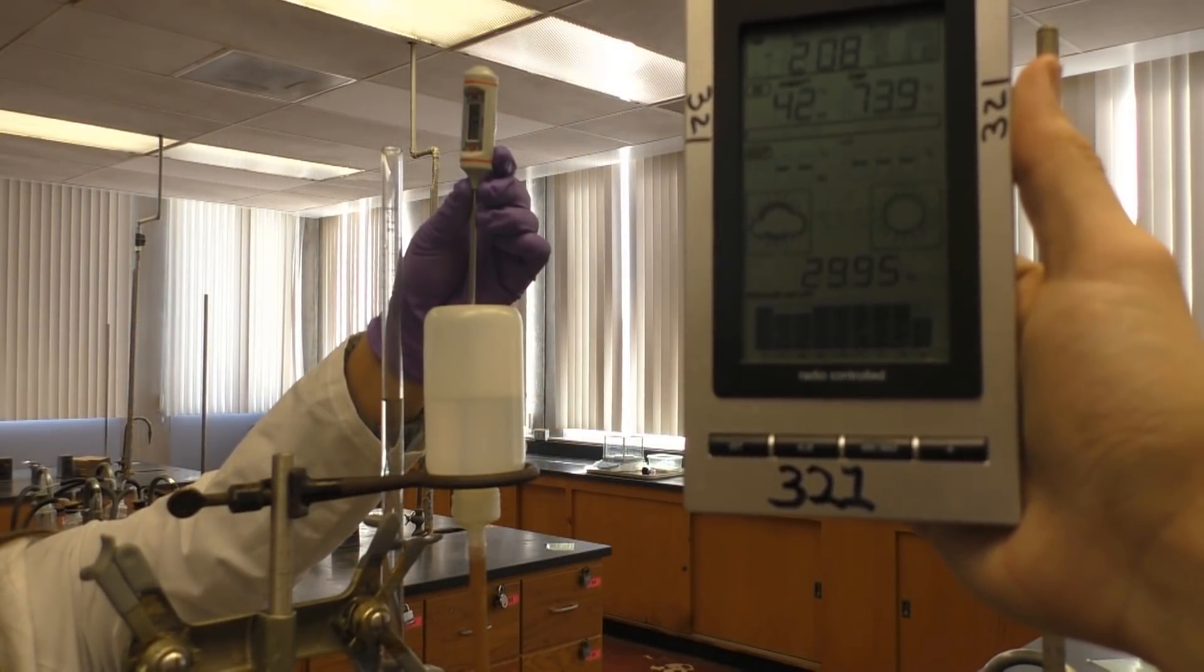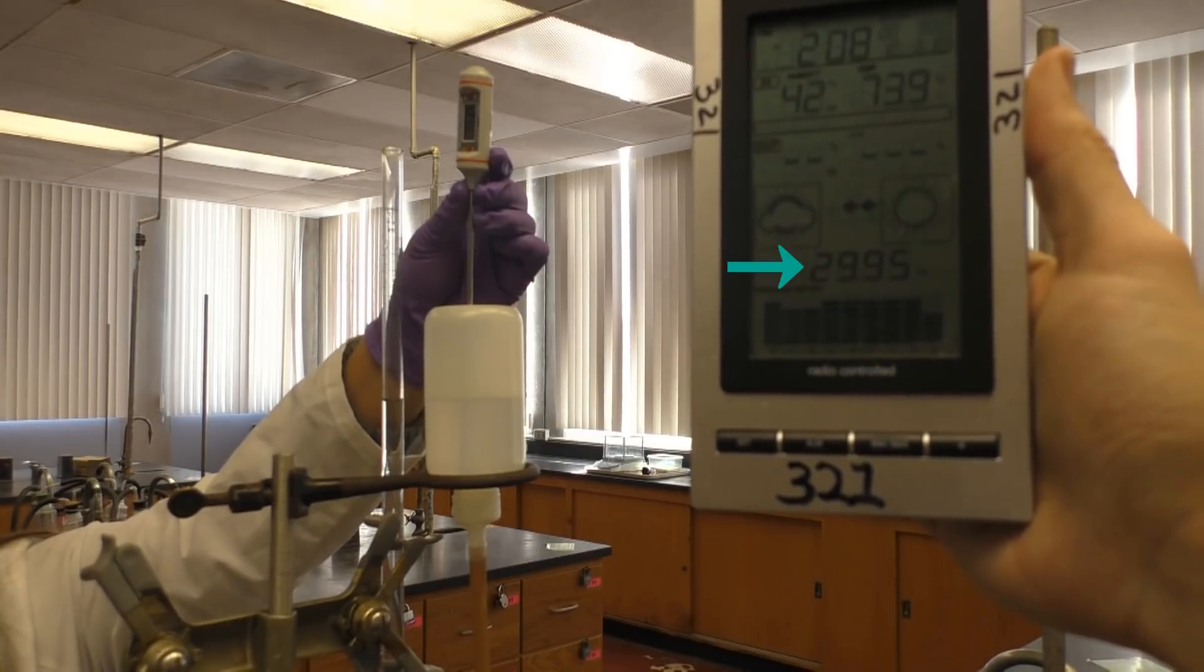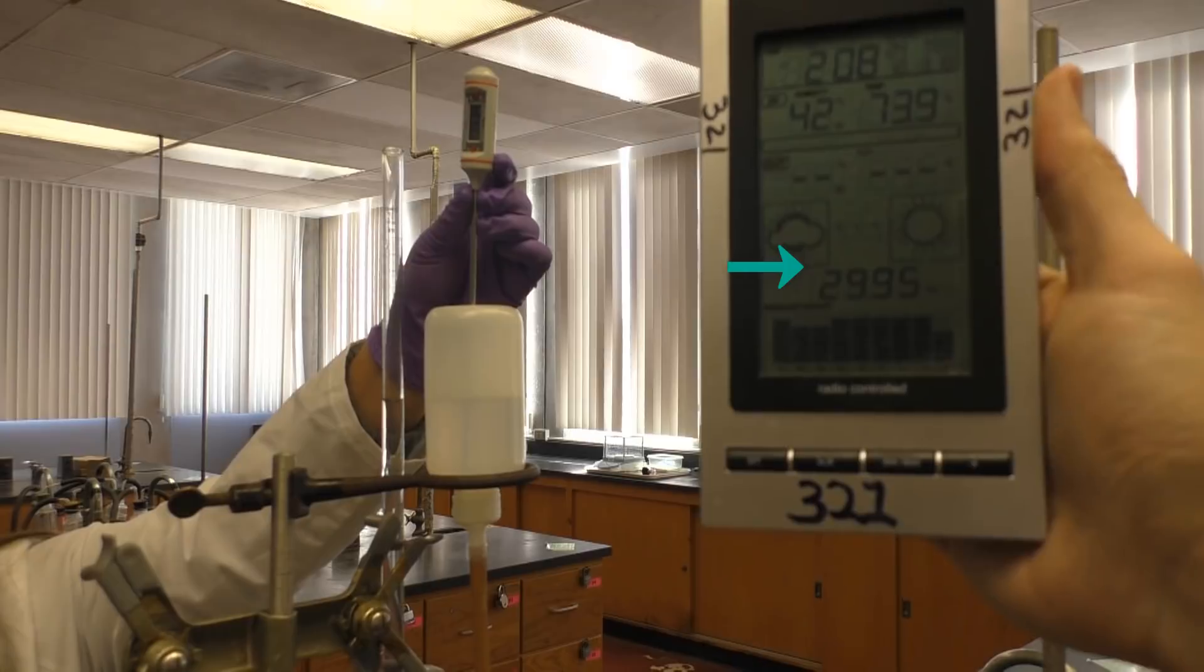Once you've removed all possible air bubbles from your system, take the temperature of the water in your leveling bulb and write it down. While you're at it, also write down the atmospheric pressure of the room. This will be provided by your instructor or can be found on the device in the front of the room.